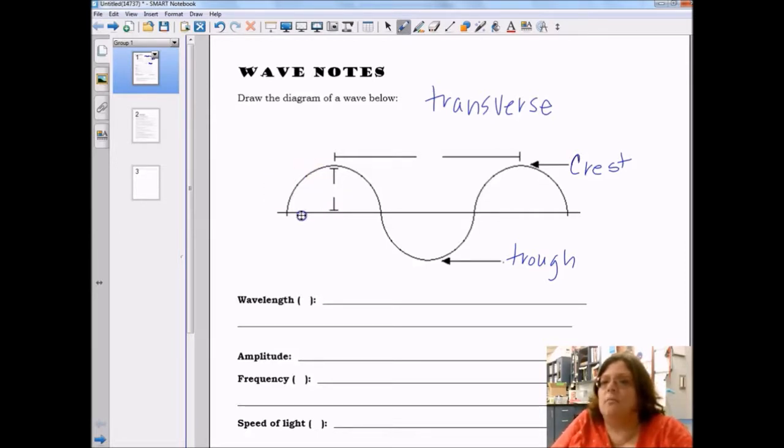The distance from the resting position, which is this line here, to the top of the crest is called amplitude and the distance from one crest to the next is the wavelength.